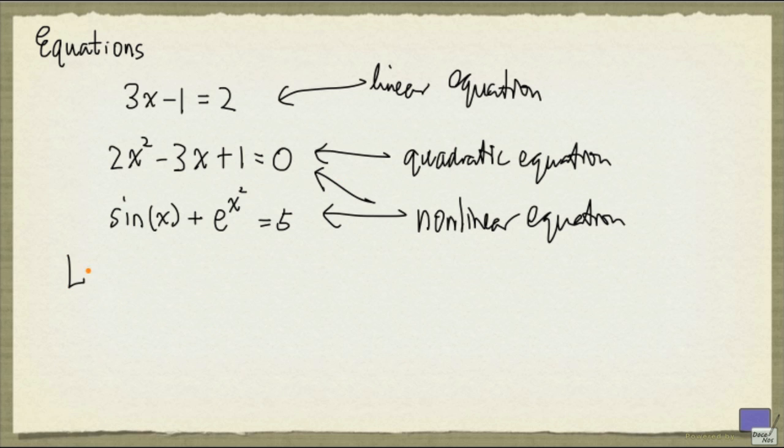So what is a linear equation? A linear equation has the following form. It's a sum of n terms, where each term is a constant multiplied by a variable. And the right-hand side is again some constant.